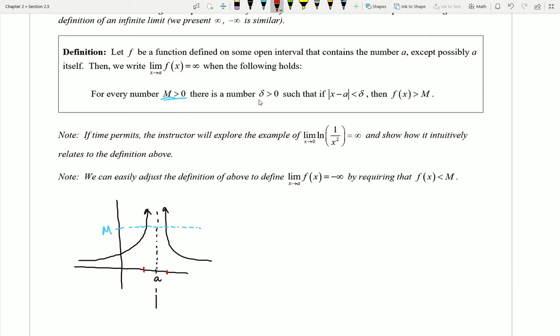And so again there should be a value of delta, a distance that I go out to the left and right, so that if I pick an x inside that interval my y value is big enough. Essentially, how close to a do I need to be in order to get big enough? And you can see there are ways to similarly define what happens when you go towards negative infinity.